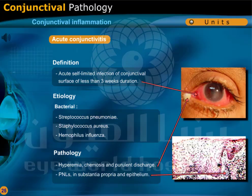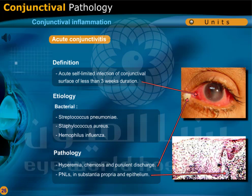Conjunctival Inflammation: Acute conjunctivitis. This is an acute self-limited infection of the conjunctival surface of less than 3 weeks duration. It is caused by bacteria such as Streptococcus pneumoniae, Staphylococcus aureus, and Haemophilus influenzae. There is hyperemia,